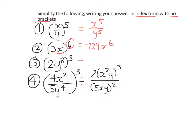Let's look at the third example. We're going to need a few index laws here. We raise the two to the power of three to get eight. We also need to raise x to the power of three, which requires the power-of-a-power rule from the previous lesson: keep the same base and multiply the powers. And then we're done.